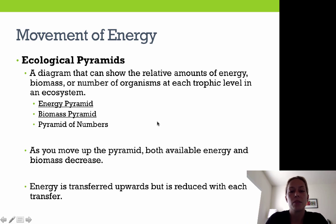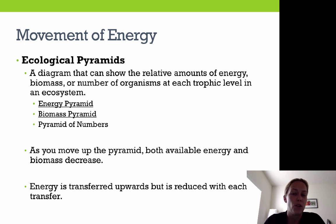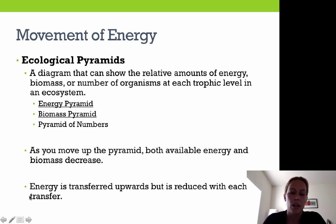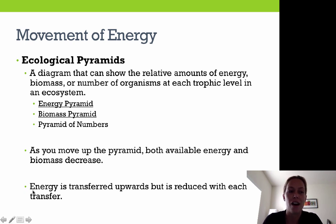Ecological pyramids are diagrams that show the relative amounts of energy, biomass, or number of organisms at each trophic level in an ecosystem. We'll primarily be focusing on energy pyramids. There are three types: energy pyramids, biomass pyramids, and a pyramid of numbers. As you move up any of the pyramids, both available energy and available biomass decrease. This ties back to the rule of 10 — energy is transferred upward from one trophic level to the next but is reduced with each transfer, with only 10% passed on and 90% lost to heat and other life processes.